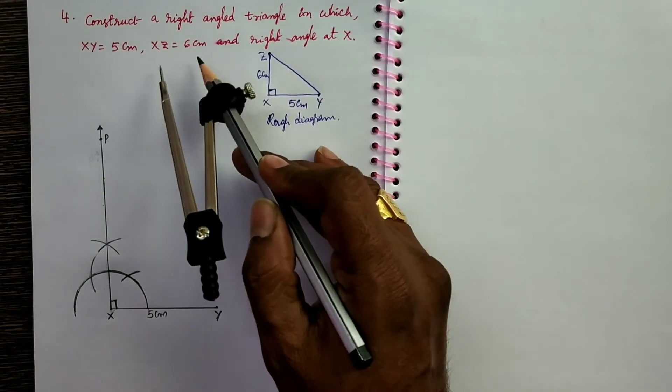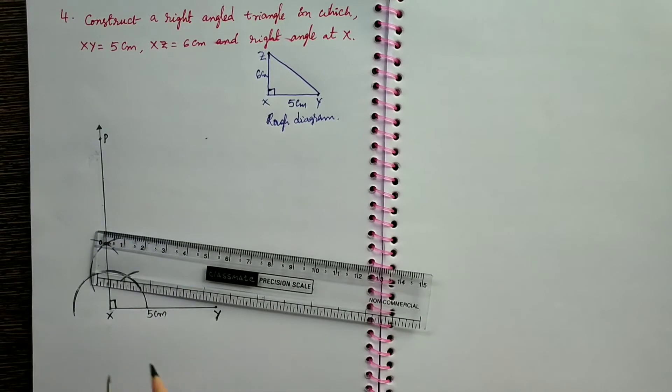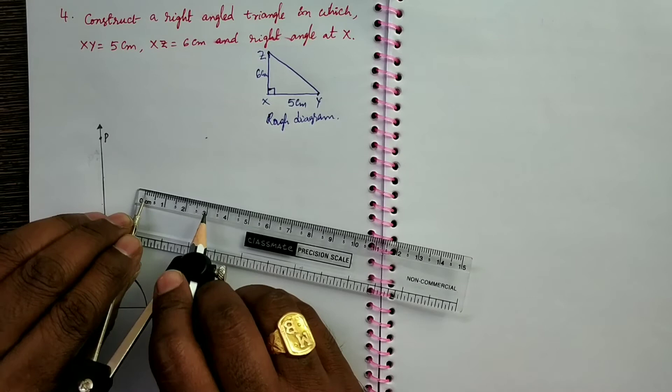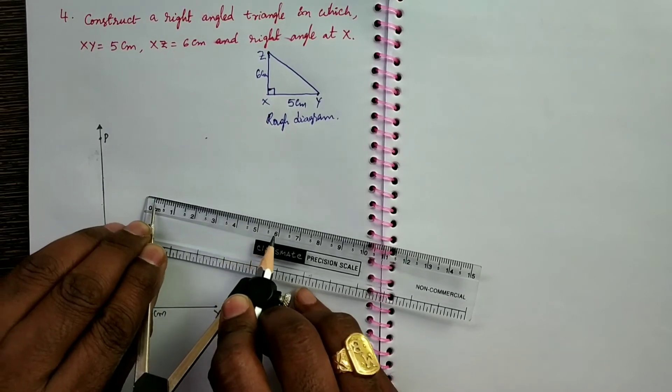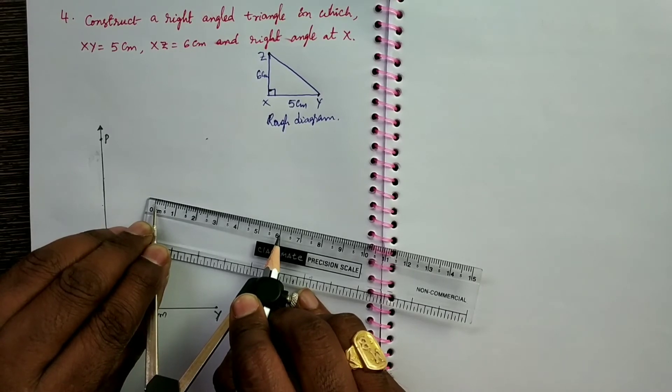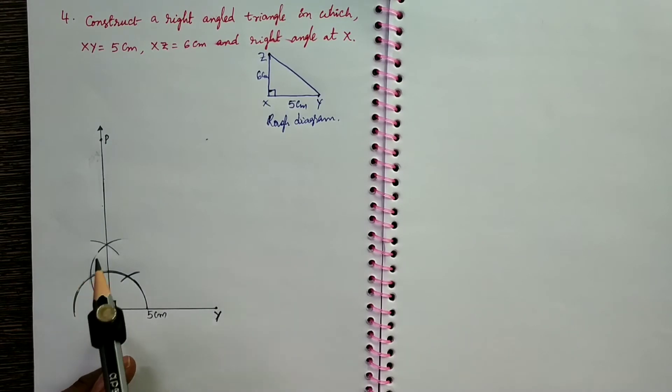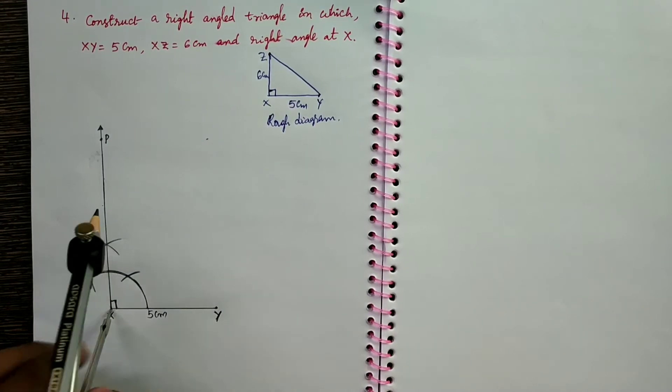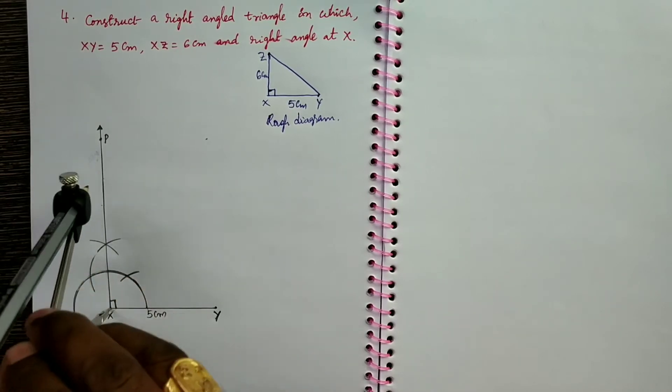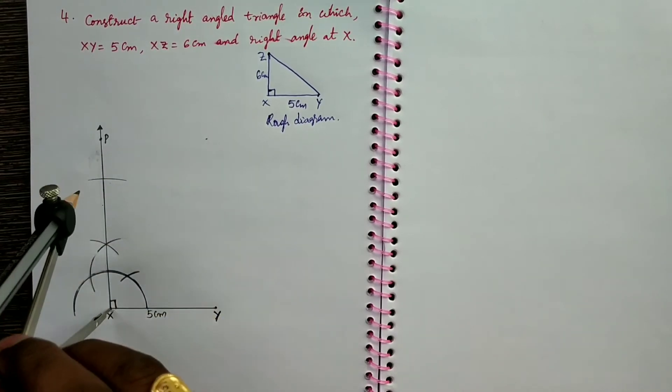Given measurement is XZ equals 6 cm. Take a scale and keep a compass point on 0 and pencil point on 6 like this. Take carefully. Now take X as center and this 6 cm as radius. Draw an arc.